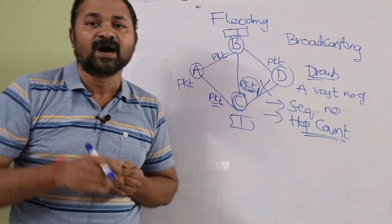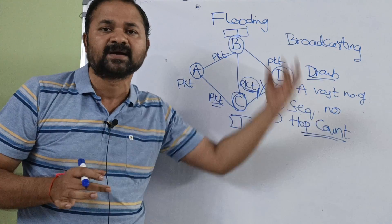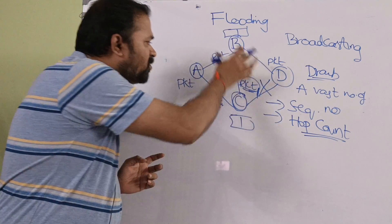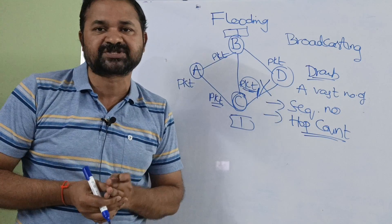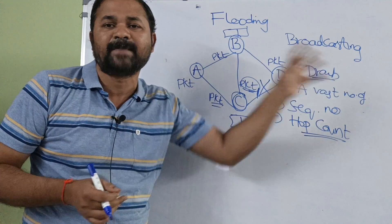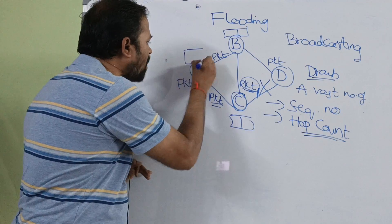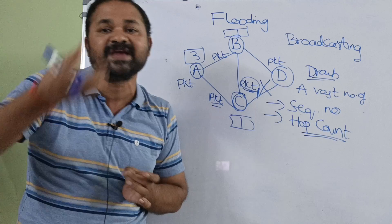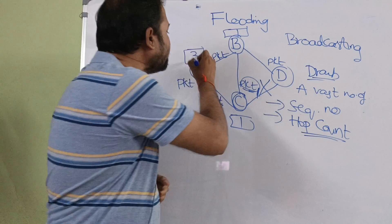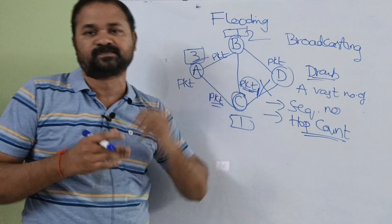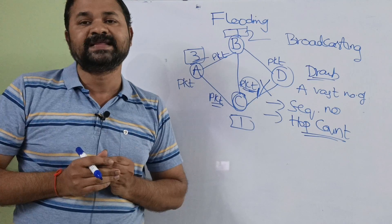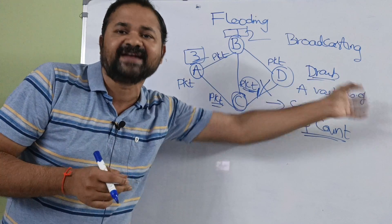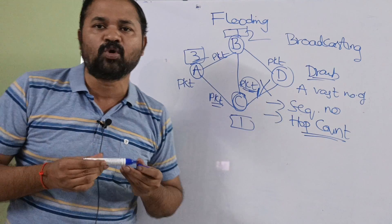The second approach is by maintaining a hop count in each packet. In this example we have four routers, so A will send the packet to at most three routers. Let the hop count value be 3. Whenever a router receives the packet, it decrements the hop count by 1. After B receives the packet, it decrements the hop count to 2. Whenever the hop count becomes 0, that packet is simply discarded. By using this approach, we can also avoid the problem of duplicate packets being generated. This is about flooding in computer networks.